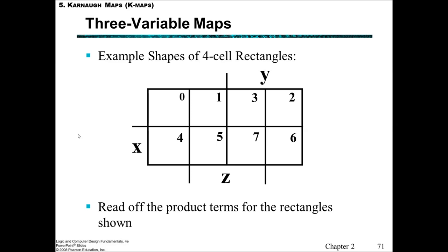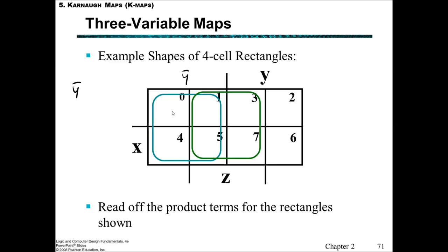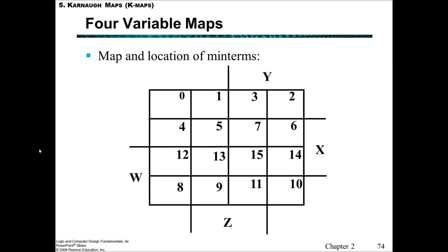Here are some shapes with four-cell rectangles. With two-cell rectangles we always had two variables; with four-cell rectangles we'll only have one variable. In one example, Z is changing, X is changing, but Y is not changing — it's constantly not-Y — so that rectangle represents not-Y. For the next one, X is changing, Y is changing, and Z is just Z, so this rectangle represents Z. Another one wraps around the outside — minterms 0, 2, 4, 6 — all four of these terms represent not-Z.